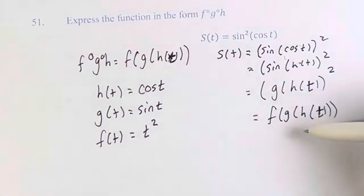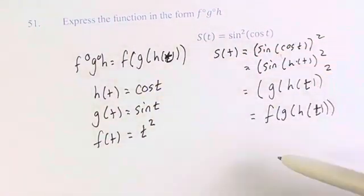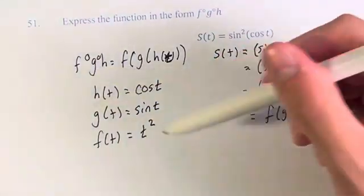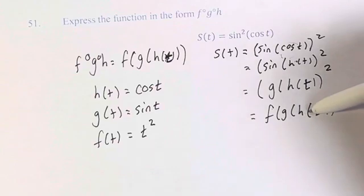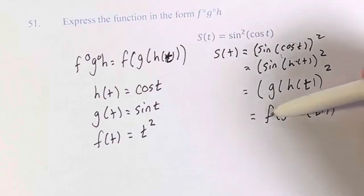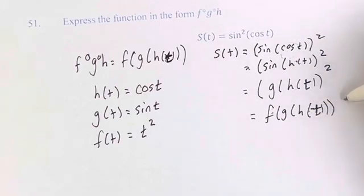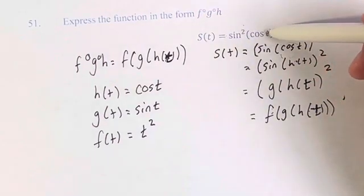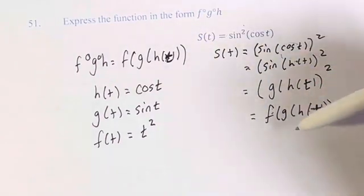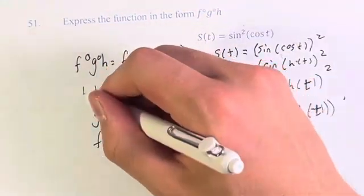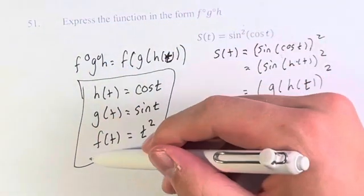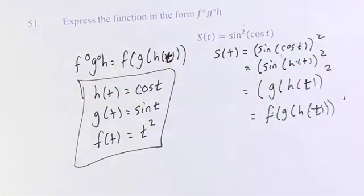You can go back in and re-plug in these functions. This is f of g of cosine of t, which means it's f of sine of cosine of t, which means it's sine of cosine of t squared, which means it's sine squared of cosine t — capital S of t. This is the composition f of g of h that results in the function.